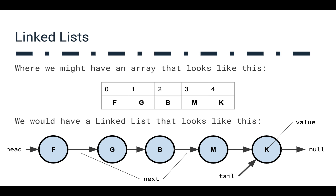Because the linked list uses these nodes, it only uses space for exactly as much as it needs. This picture might actually illustrate it a bit. If we have an array, you have indices 0, 1, 2, 3, 4, corresponding to some particular value. But a linked list looks more like node objects — represented by circles — where each node has a value (F, G, B, M, K) and a next reference represented by an arrow pointing to the next node. We have a couple of special references: the head, which points to the first item, and the tail, which points to the last item. These allow us to make our implementation pretty efficient.